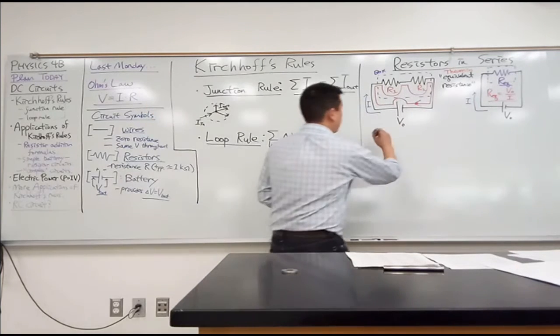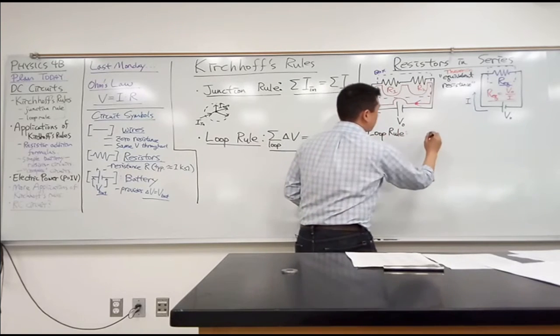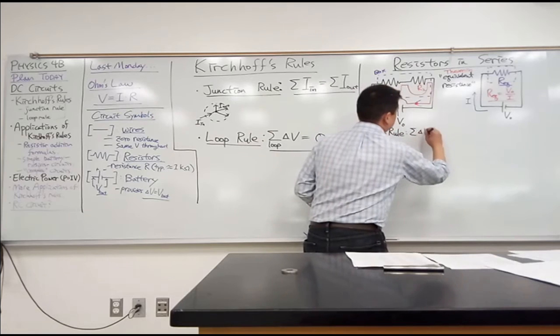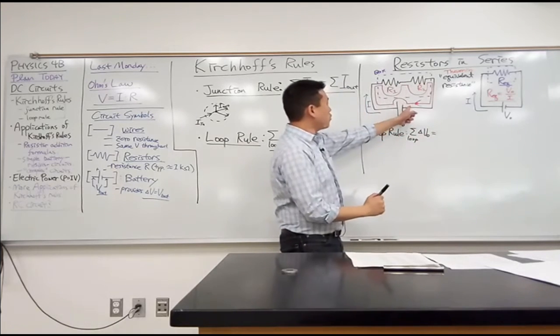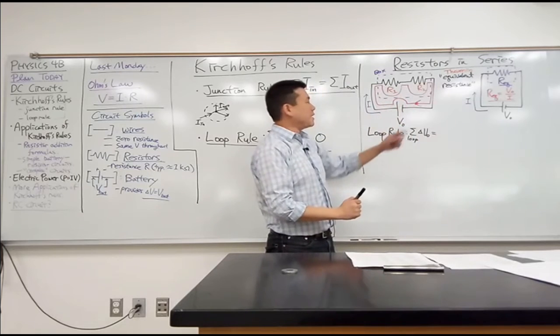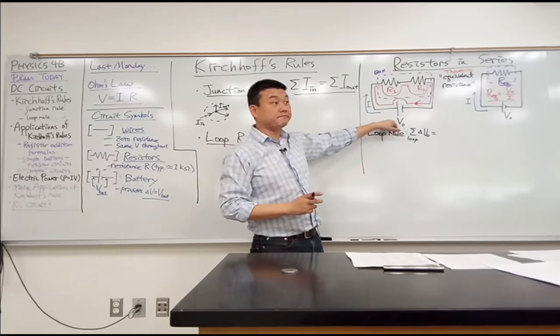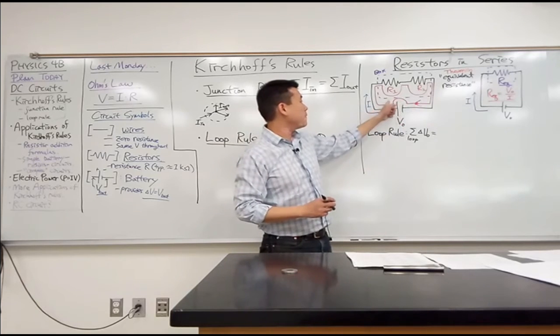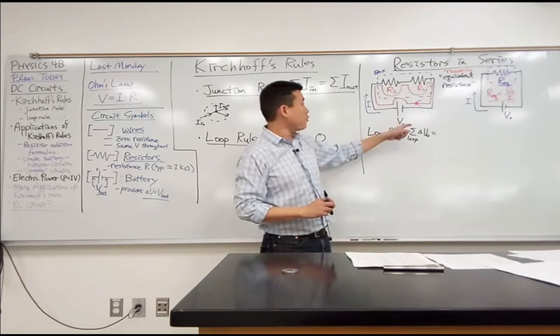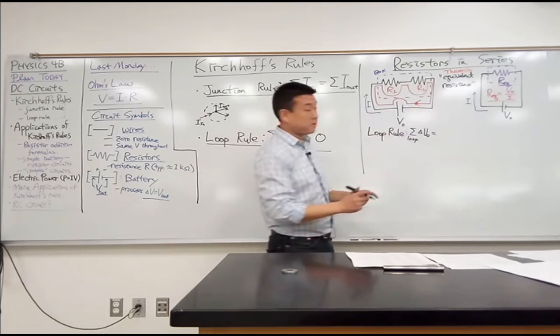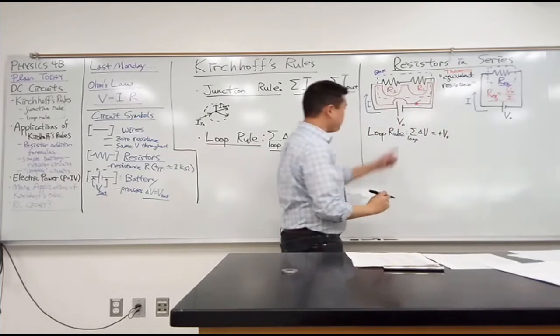So, loop rule says that change of voltage added up all around the loop. So, as I go across the battery, what's my change in voltage? So, plus V0 or minus V0? Does the voltage go up or go down as I go across this battery? Up, right? I'm going from negative to positive terminal. So, it's a plus. Oops. V0. All right.